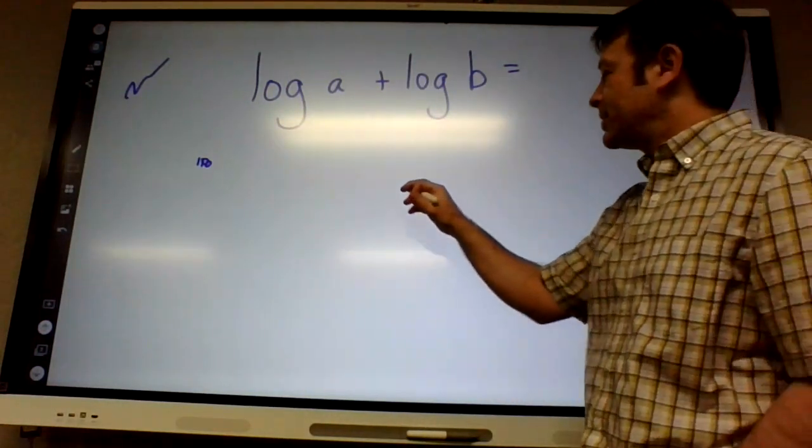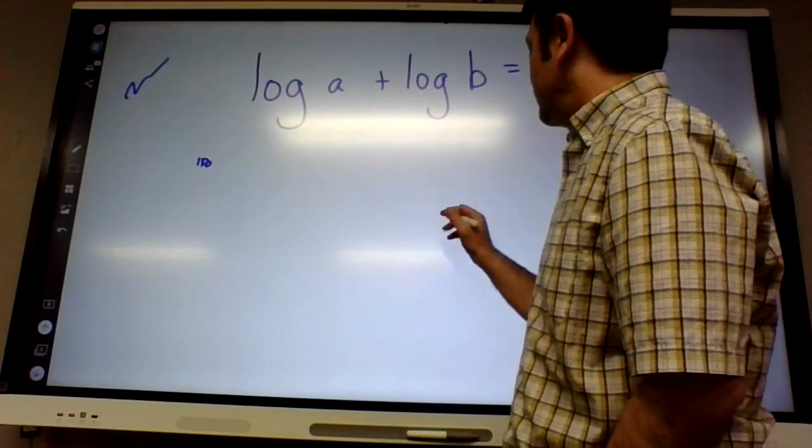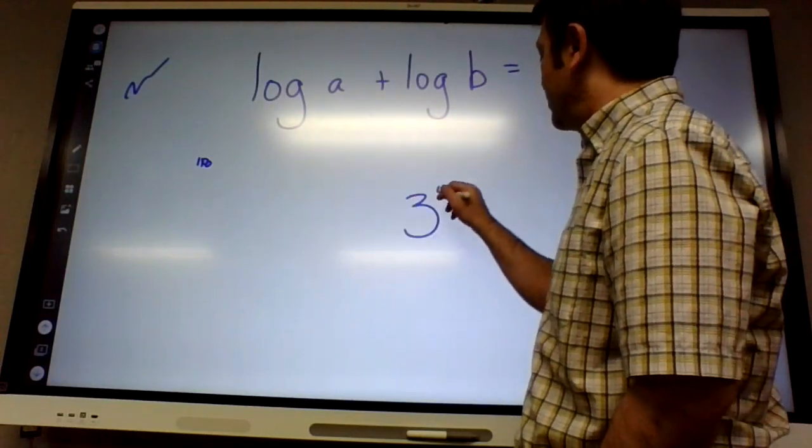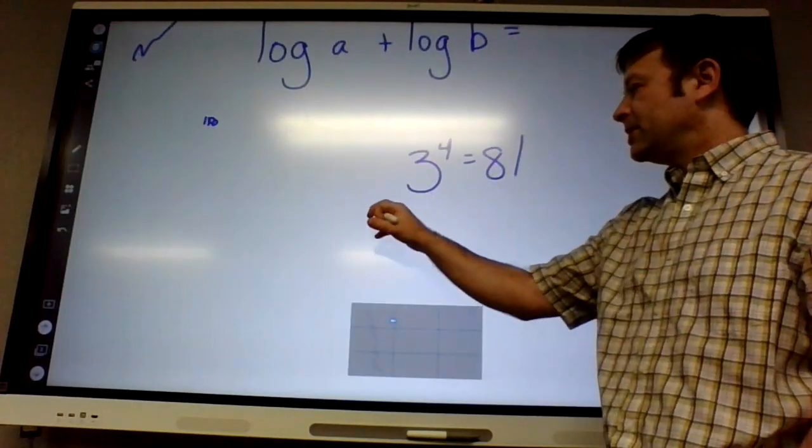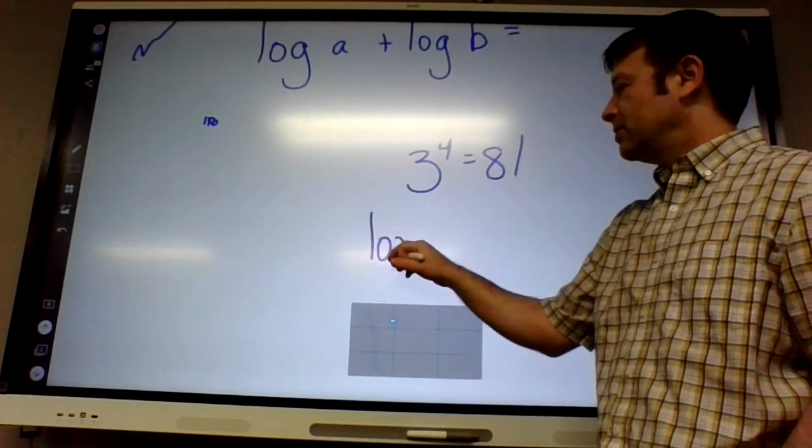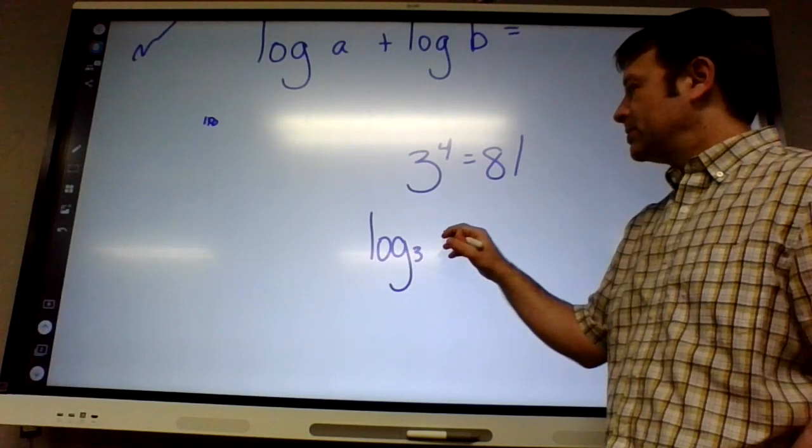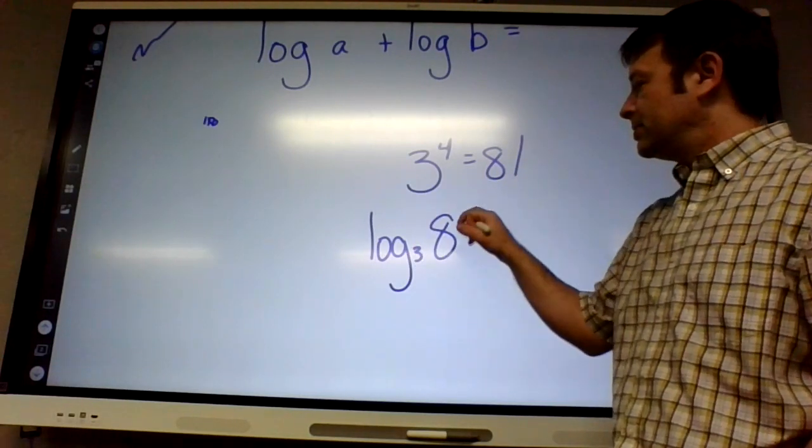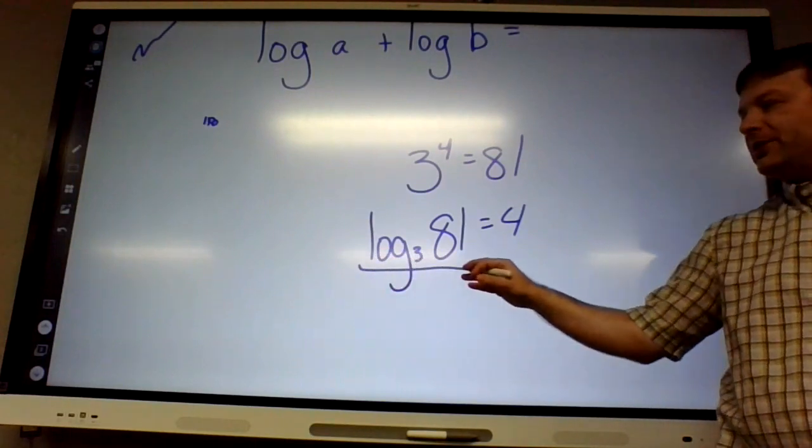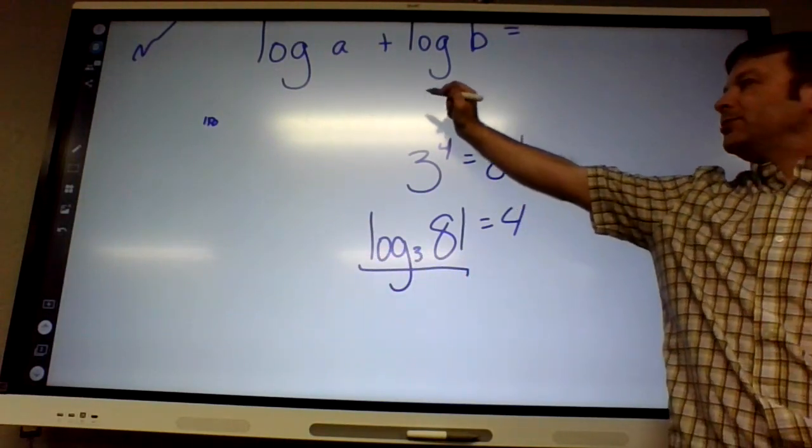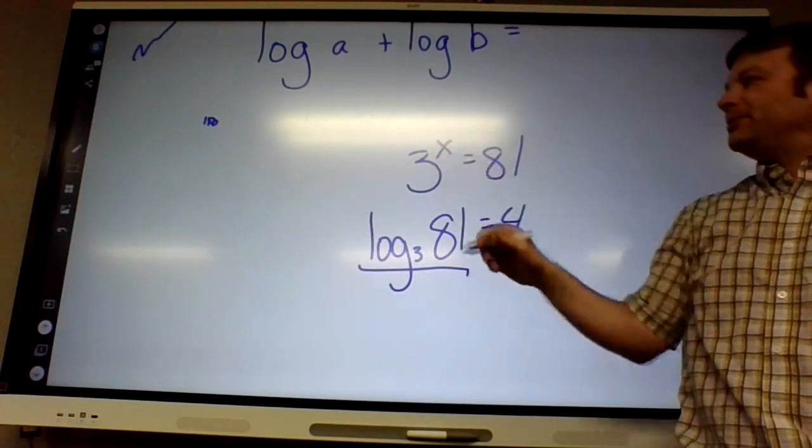Let's back up for a second. Let's say like 3 to the fourth is 81. How do I write this in a log function? You guys remember log base 3 of 81 equals 4. Yeah, so if you plug this in the calculator you should get 4. So remember what logs do is help find a missing exponent.